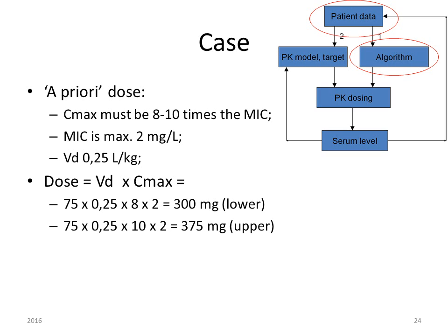Now we can calculate our a priori dose. The Cmax must be about 8 to 10 times the MIC. The MIC is maximally 2 milligrams per liter and the volume of distribution is 0.25 liters per kilogram. The dose equals the volume of distribution times the Cmax: 75 × 0.25 × 8 × 2 = 300 milligrams (the lower dose), or 75 × 0.25 × 10 × 2 = 375 milligrams (the upper range).